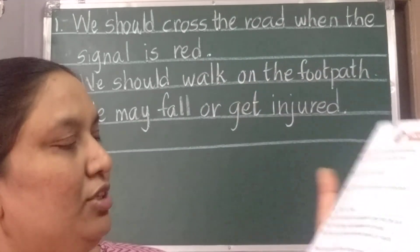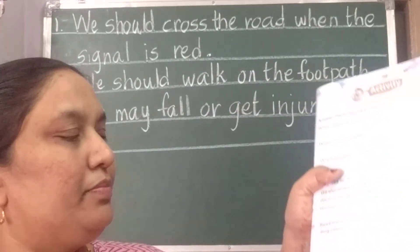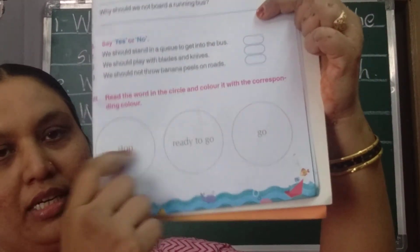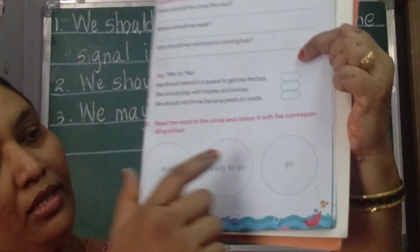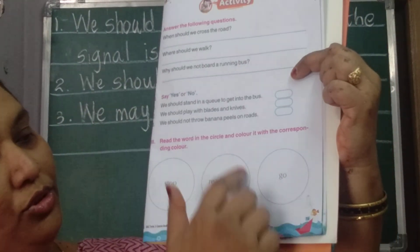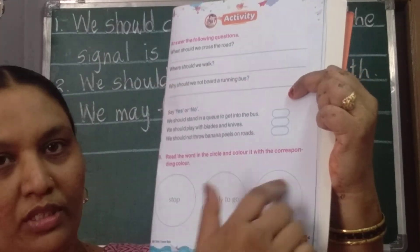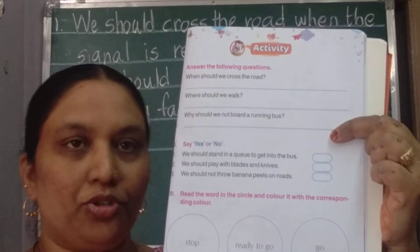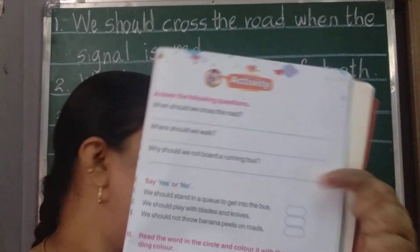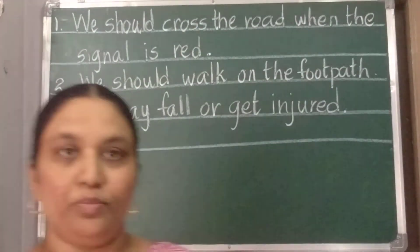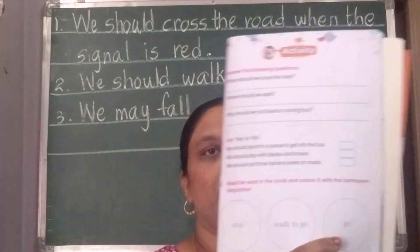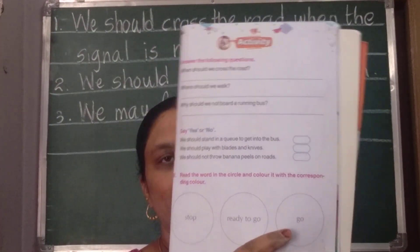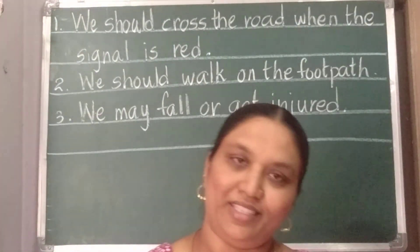After that, you should color the traffic signals: stop means red, ready to go means yellow, and go means green. So complete this page today after writing in the notebook. Okay children, goodbye.